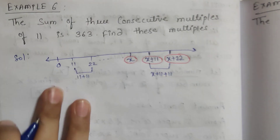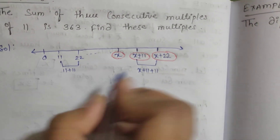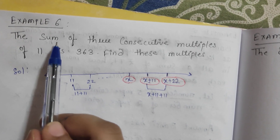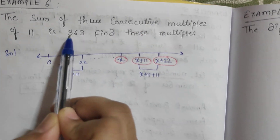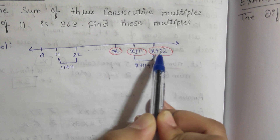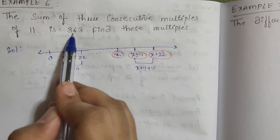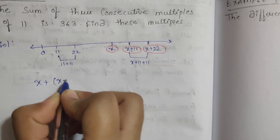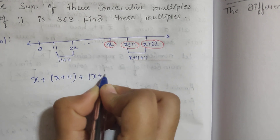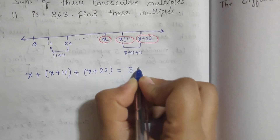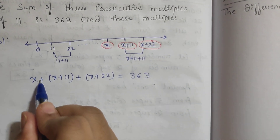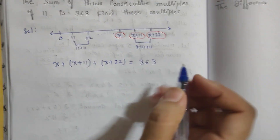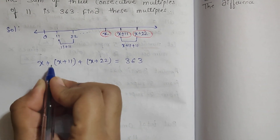Let the three consecutive multiples of 11 be x, x plus 11, and x plus 22. According to the question, their sum is 363. So we write the equation: x plus x plus 11 plus x plus 22 equals 363.